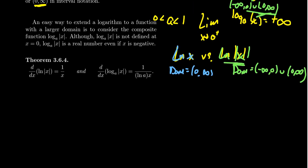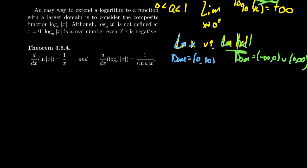What we will see is that the derivative of the natural log of the absolute value of x is equal to 1 over x. The derivative doesn't change when you extend its domain in this manner. This will also be true if you use a different log base: the derivative of log base a of the absolute value of x will still be 1 over the natural log of a times x.